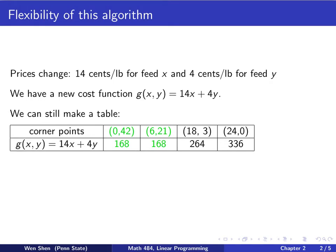In the table, we list the corner points, all four of them, and then we compute the cost function at these four corner points, which we list here: 168, 168, 264, 336. Now here something interesting happens. We see that the minimum value, 168, is obtained at two corner points, the first one and the second one.